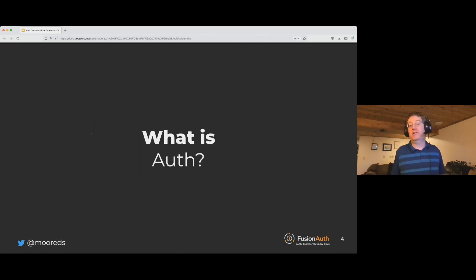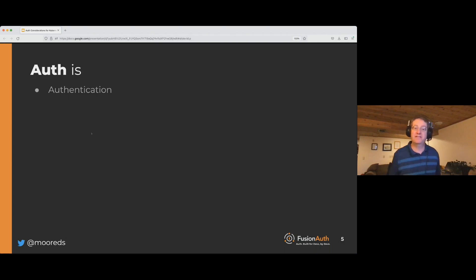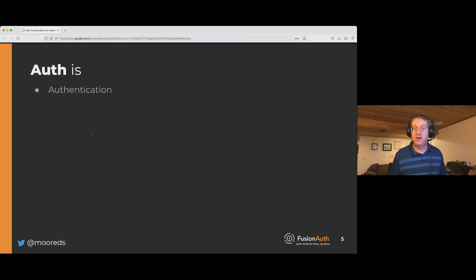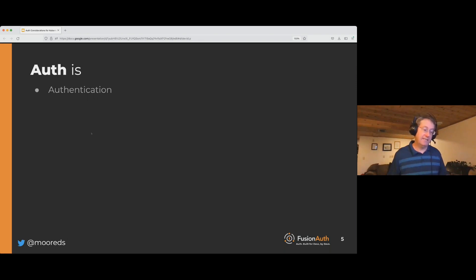So briefly, what is Auth? Auth is really three things. There is authentication, which is who you are. This can be in an offline or online context. An offline context might be me going to the post office to pick up my mail and presenting a government-issued ID. When it's examined by a postal worker, it tells them that I'm Dan Moore and it authenticates me. In an online scenario, it tends to be something you know, something you have, something you are, or conceivably where you are. Often with online systems, it's username and password, but there are many other factors that can play in.